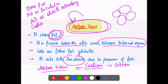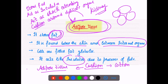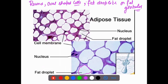When there is a sudden injury, the internal organs are well protected by fat cells. The structure of adipose tissue shows oval-shaped cells with fat droplets or fat globules present inside. The outer layer is the cell membrane, then there is the nucleus, and the space underneath is where fats accumulate as fat droplets. Functions: it stores fat, acts as an insulator, and acts as a shock-absorbing cushion.